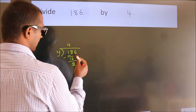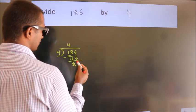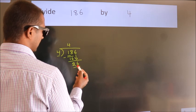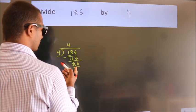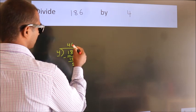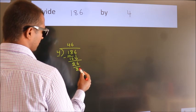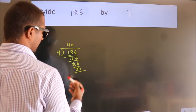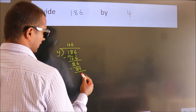After this, bring down the beside number. So, 6 down. So, 26. A number close to 26 in 4 table is 4 sixes, 24. Now we subtract. We get 2.